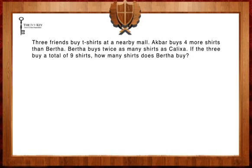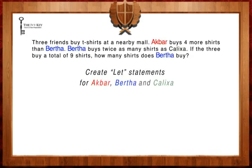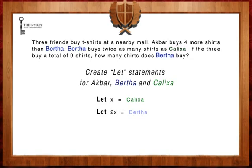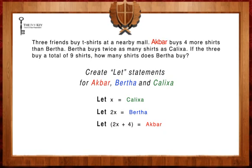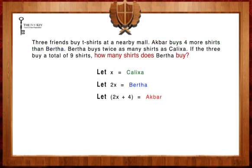If the three buy a total of nine shirts, how many shirts does Bertha buy? The first step to solving this question is to create let statements for Akbar, Bertha, and Calixa. We're going to let X equal Calixa, since she sets the base level for the amount of shirts bought. Next, we're going to let 2x equal Bertha, since she bought twice as many shirts as Calixa. Last, we're going to let 2x plus 4 equal Akbar, since he bought four more shirts than Bertha.